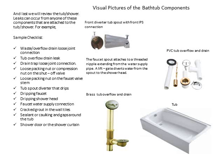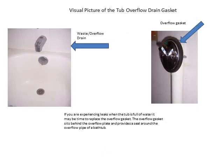On the right-hand side of the slide, you see some visual pictures of the bathtub components, including a visual picture of the tub overflow drain gasket. If you're experiencing leaks when the tub is full of water, it may be time to replace the overflow gasket. The overflow gasket sits behind the overflow plate and provides a seal around the overflow pipe of a bathtub.